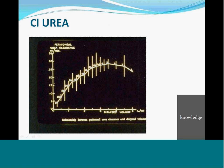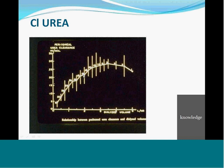Looking at peritoneal urea clearance — at a dialysate volume of one liter per hour, two liters per hour, three liters per hour, and so forth — there is a continuous increase in urea clearance with increasing volume per hour that tends to flatten off at higher volumes. At two liters in particular, the urea clearance captures the majority of the curve. So two-liter infusions were chosen for intermittent PD.